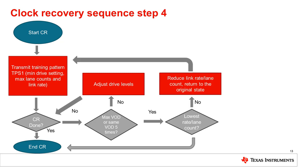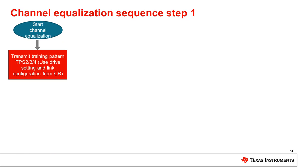If changing the voltage swing or pre-emphasis fails to achieve CR lock, the source can reduce the link rate or lane count and repeat the CR sequence. If any of the CRDONE bits remain unset even at the reduced bit rate and/or reduced lane count after all voltage swing values have been tried, the source ends training without establishing the link, which typically results in a blank screen. Once CR is completed, the source will start the channel equalization sequence of link training.